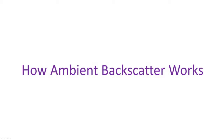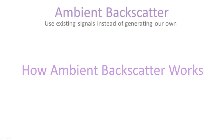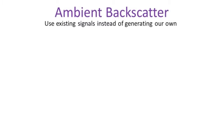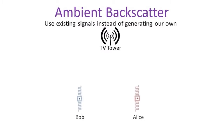Ambient Backscatter enables wireless communication by leveraging the signals all around us instead of generating our own. Say two devices, Alice and Bob, need to communicate.